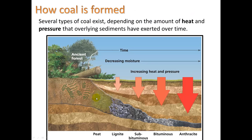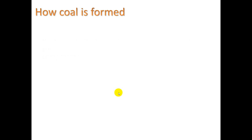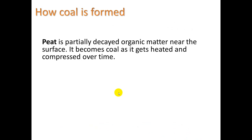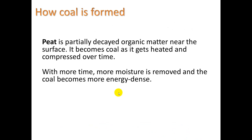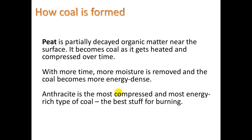Peat is like the early stage of decomposition of woody material. With more pressure and more heat, we get less moisture and more compression, so higher carbon content. Anthracite burns the cleanest because it burns the hottest and has the lowest sulfur content — those are two important things. When we talk about a type of coal burning hotter, that means we're more likely to get complete combustion in the form of carbon dioxide as opposed to carbon monoxide.